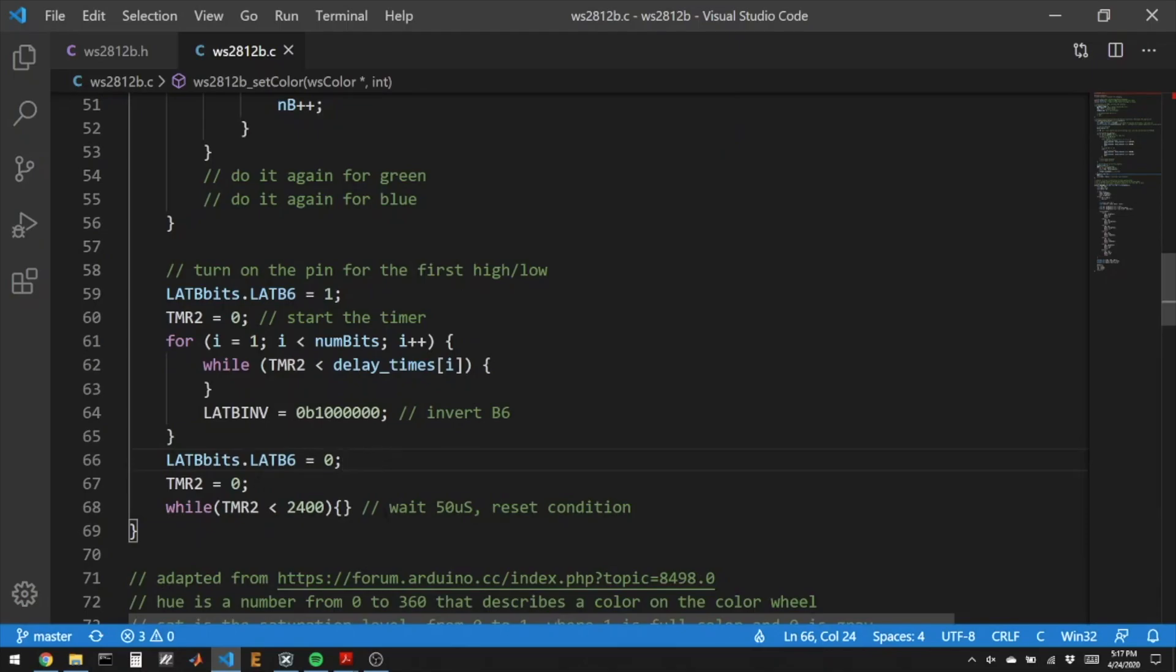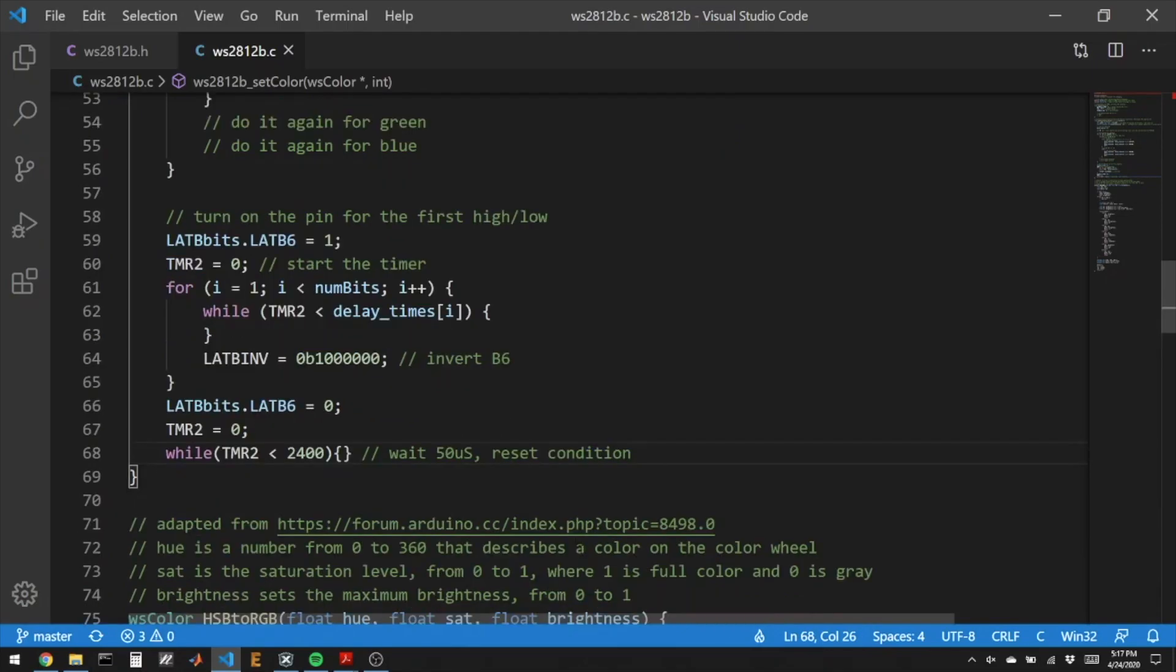Then we'll set the pin low and wait 50 microseconds. That way, if we immediately try to write to the LEDs again, we've done the reset condition, and the next time we write, we'll start with the first LED in the strip.